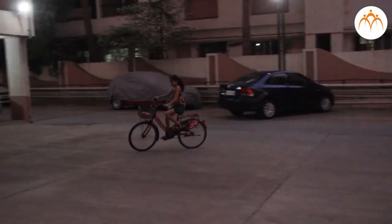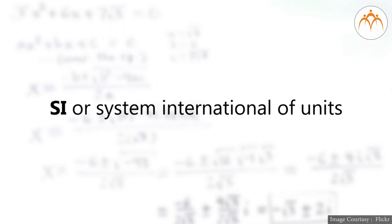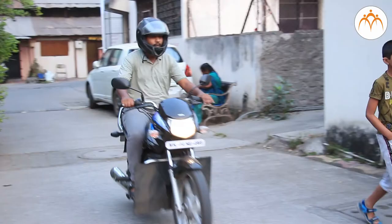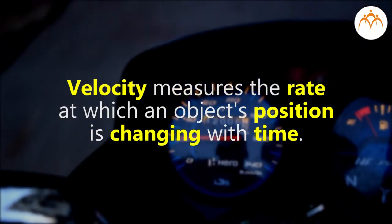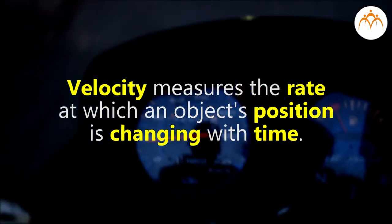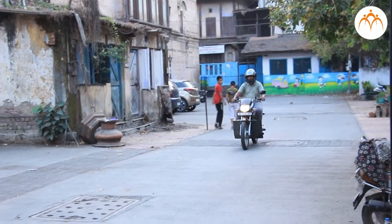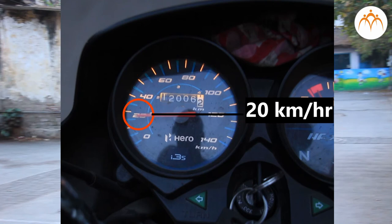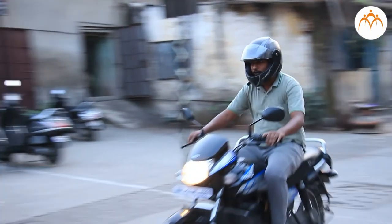We measure position in units of distance. Physicists normally use the SI, or System International, of units. The SI unit of distance is the meter. When an object is moving, it has a velocity that is not zero. Velocity measures the rate at which an object's position is changing with time. Velocity is a vector quantity — it has an amount and a direction. The amount of your velocity is the speed at which you are travelling, and the direction of your velocity is the direction in which you are heading.